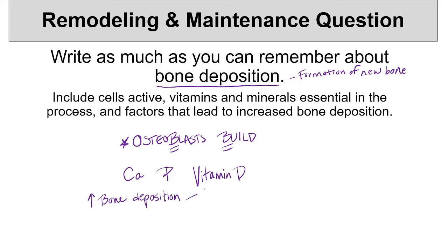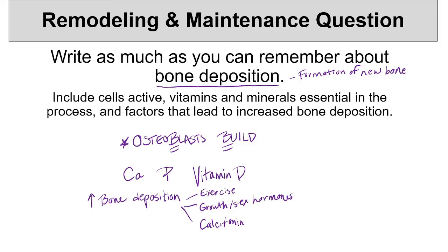Exercise or any mechanical loading on these bones can lead to growth in the bones. We'll see growth hormones and sex hormones, and also calcitonin — that hormone from the thyroid gland. The major hormone that opposes calcitonin is the parathyroid hormone, which will increase bone resorption.